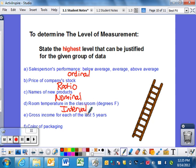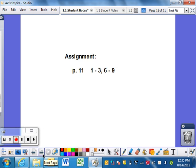Interval because you can do math between values but there's no zero value. Ratio needs a zero value. Gross income for each of the last five years - you can make zero dollars, so this is ratio. It's numerical, we can do math, and it has a zero value. Color of packaging is nominal - when you list names, it's nominal.